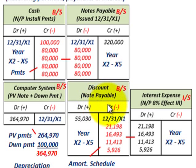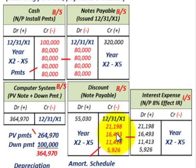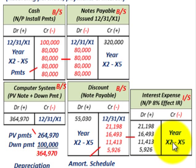The other thing to record is the actual interest expense on this note, which comes from the amortization schedule. We credit — meaning reduce — the discount on notes payable by the amortized amount each year: $21,198 in year one down to $5,926 in year four. The corresponding debit goes to interest expense on the income statement. That amortized discount reduction is what we recognize as interest expense on this zero interest bearing note, for years X2 through X5.